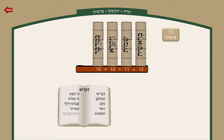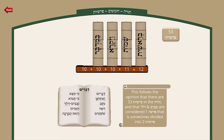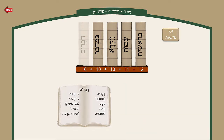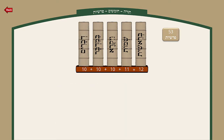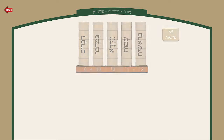We know there are 53 Parshiyos. One of the explanations — because when you count it seems like there are 54 — is that Nitzavim and Vayelech are really one Parsha that are sometimes separated, whereas Vayakhel and Pekudei are two Parshiyos that are sometimes combined. This follows the opinion that there are 53 Parshiyos in the Torah. You can even see it in the length — they're both very short, much shorter than any other short Parshiyos — and it makes sense that they're really one Parsha.